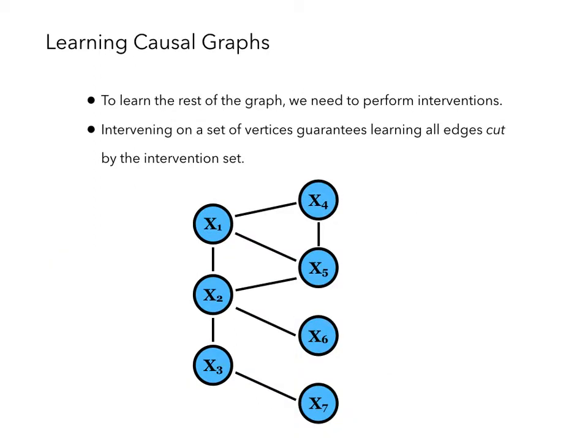To learn the rest of the graph, we need to perform interventions. Intervening on a set of vertices guarantees learning all the edges cut by the intervention set. Suppose we intervene on the vertices X1, X2, and X3. We are guaranteed to learn the direction of the edges cut by these vertices, which are the edges that are between an orange vertex and a blue vertex. In the worst case, we may not learn the other edges.